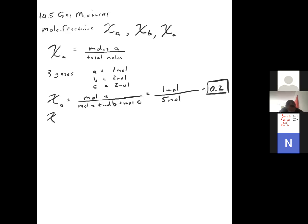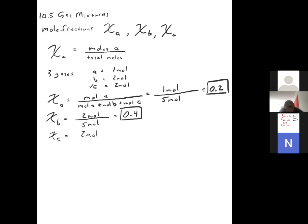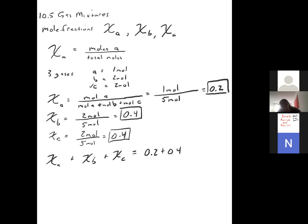If you wanted the mole fraction of B, it'd be 2 moles divided by 5 total = 0.4. Mole fraction is unitless and can never be greater than one. C would also be 2/5 = 0.4. One thing to notice: if you add the mole fraction of A plus B plus C, you get 0.2 + 0.4 + 0.4 = 1.000. The total of all mole fractions must equal one.